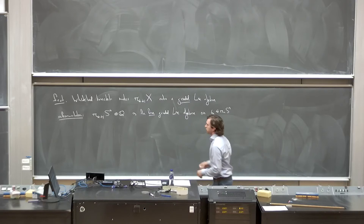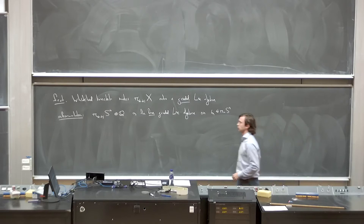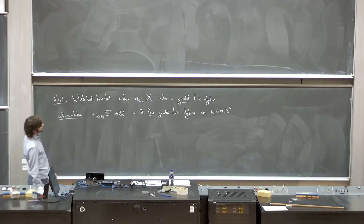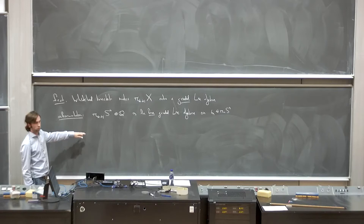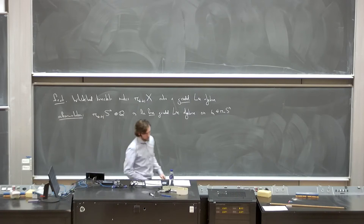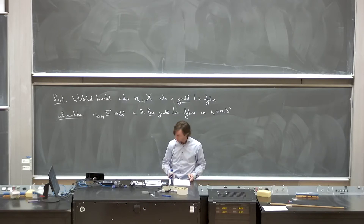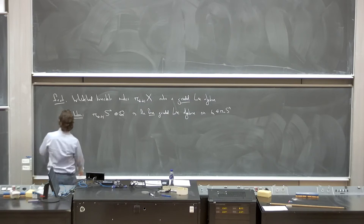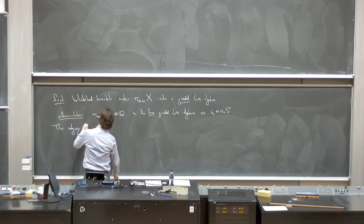This already suggests that Lie algebras play a very fundamental role here, and the real articulation of that comes in Quillen's work on rational homotopy theory. Let me describe the setup of rational homotopy theory à la Quillen — the category of rational spaces. A pointed simply-connected space X is called rational precisely if its homotopy groups are rational vector spaces.